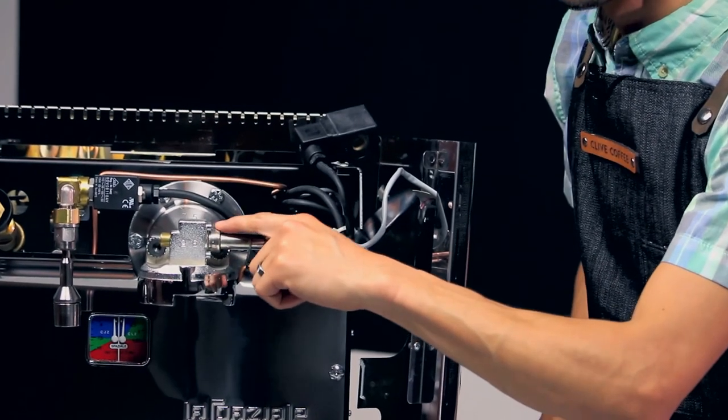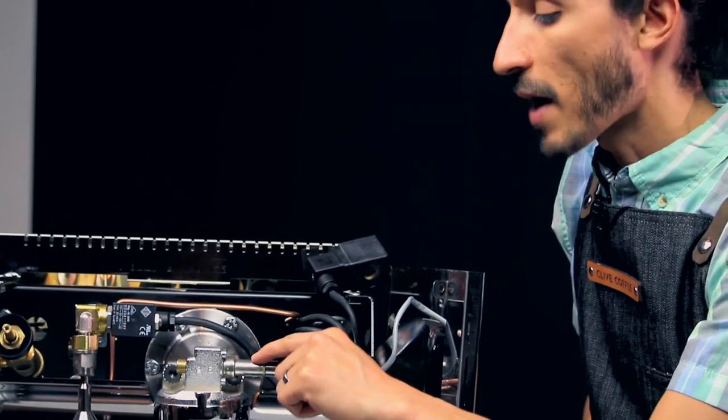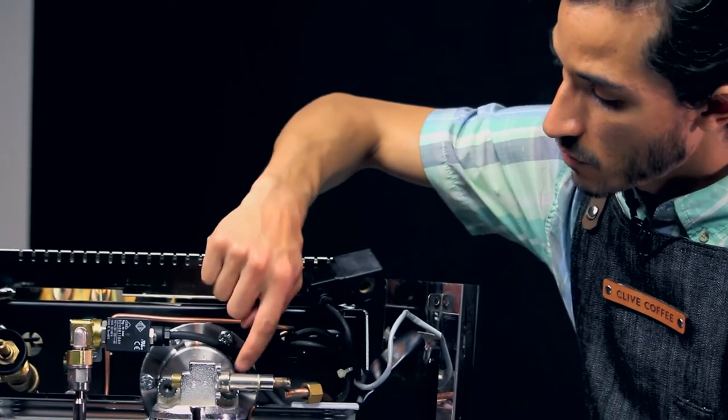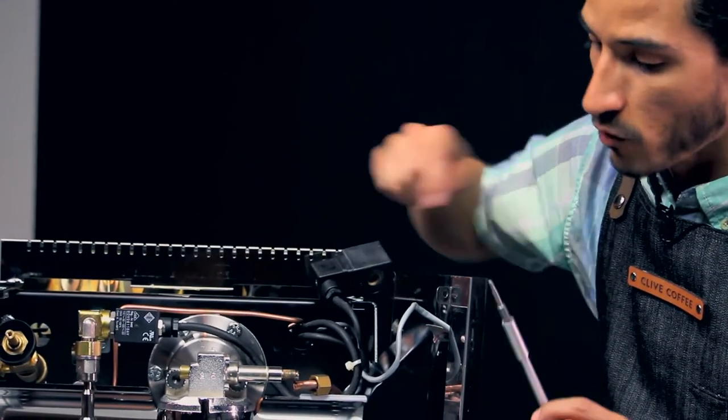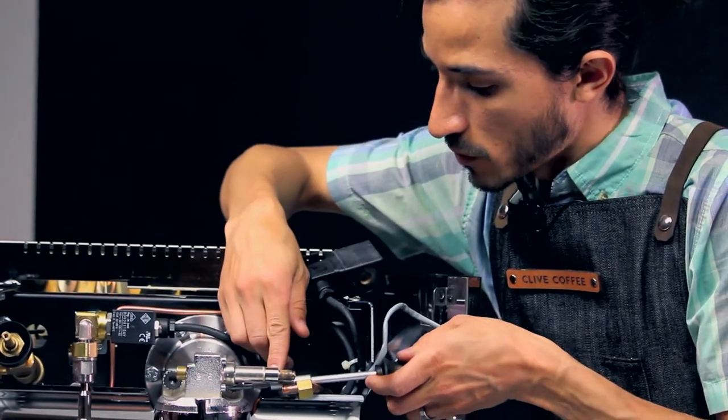To get access inside the solenoid to check the small pathways, we're going to remove the four screws. These Allen screws here are three millimeter. We'll go ahead and take all four of those off.